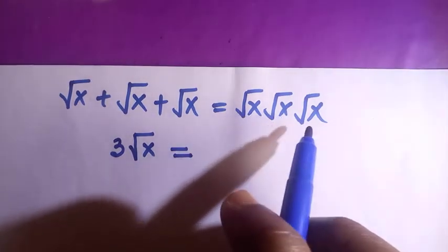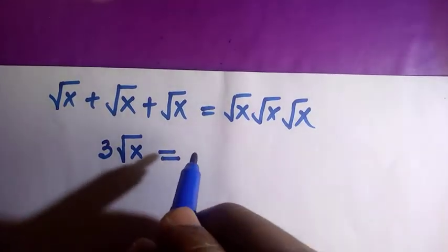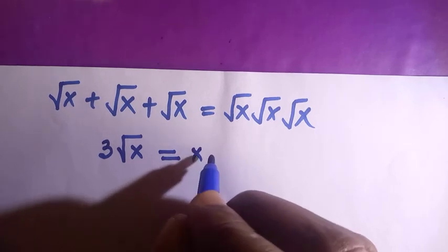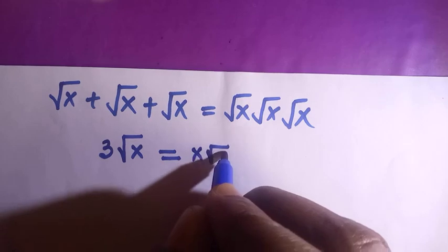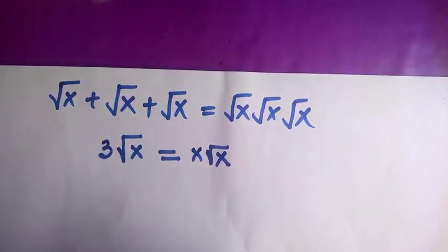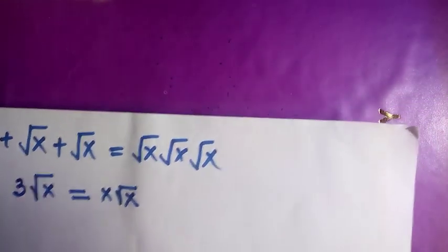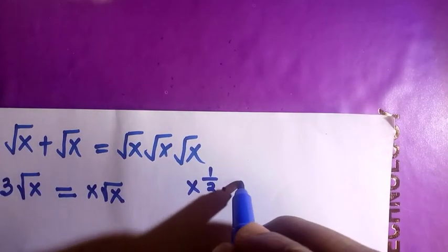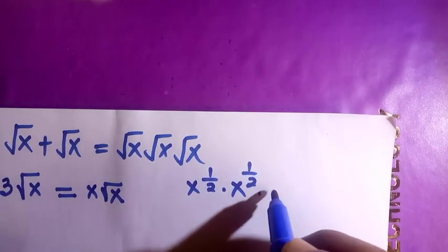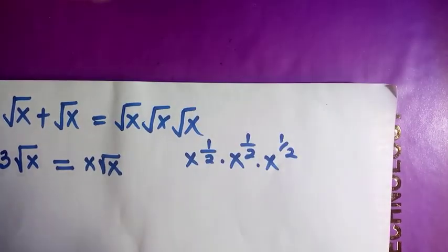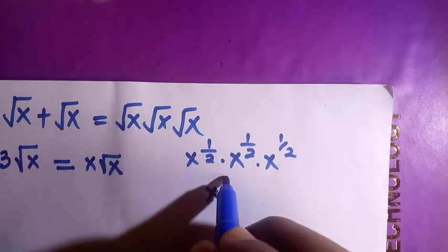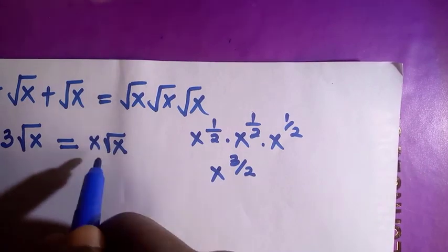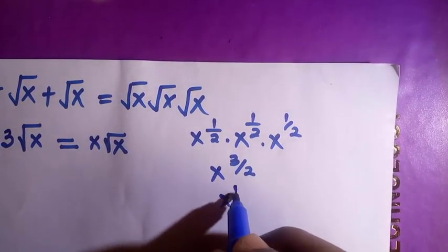Let's see the first method, and then I'll come with a second method. Everything on the right becomes x√x. To show how we arrive at x√x: we have x^(1/2) · x^(1/2) · x^(1/2), and the whole thing becomes x raised to the power of 3/2. And x^(3/2) is the same thing as x√x.